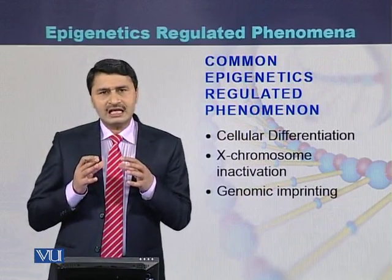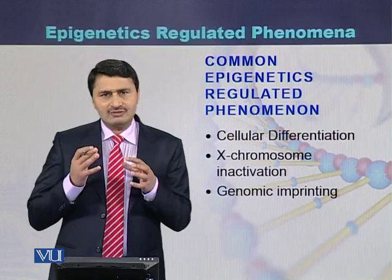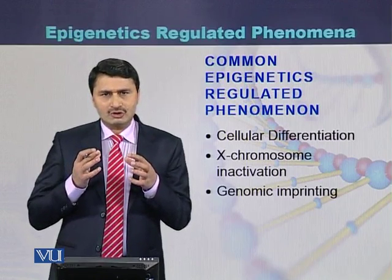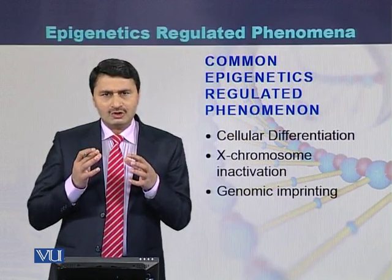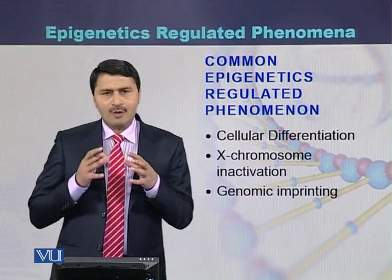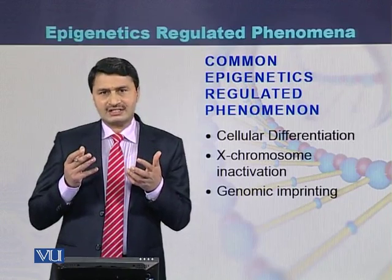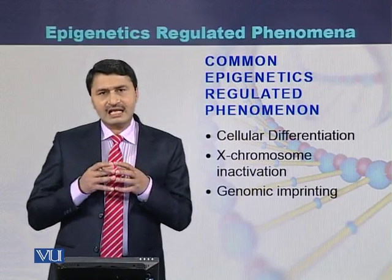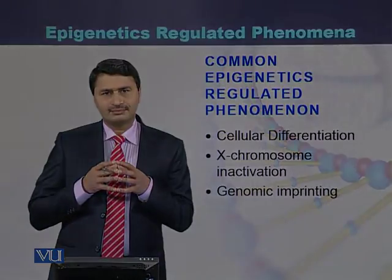Due to these differences, one individual may develop a disease while the other does not. These differences are due to the epigenetic tags present on the chromosomes of the twins. In conclusion, the common epigenetic phenomena are cellular differentiation, X chromosome inactivation, and genomic imprinting.